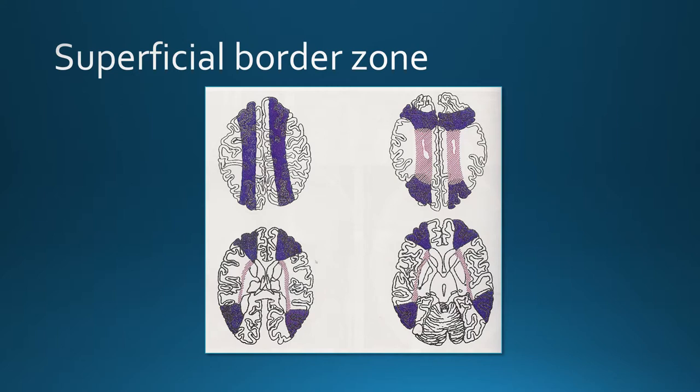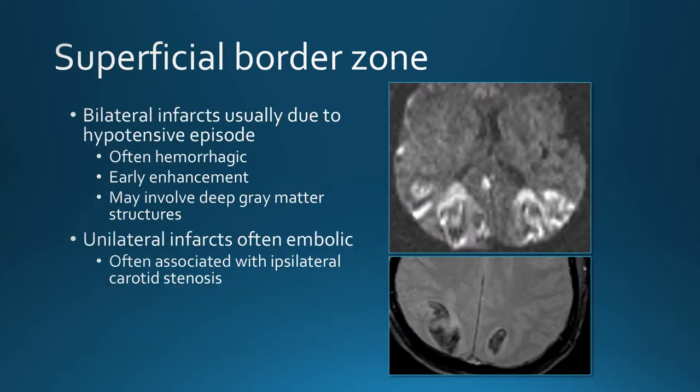This diagram shows the typical border zone locations. Superficial border zone infarcts are typically bilateral and due to a hypotensive episode. Since they're not associated with vascular occlusion, when blood pressure is restored, the full systolic pressure goes into the injured brain — so these are often hemorrhagic, and we often see early enhancement. The superficial border zone can also involve deep gray matter structures. If you see a unilateral infarct that looks like it's in the superficial border zone, these are often actually embolic infarcts — the typical hypotensive infarcts are bilateral.